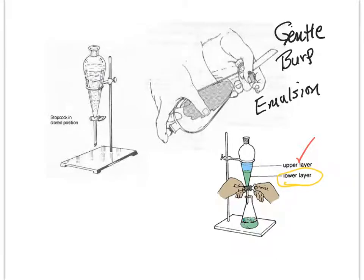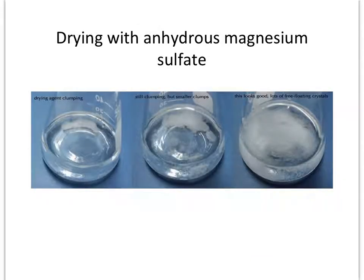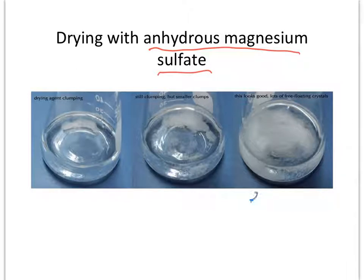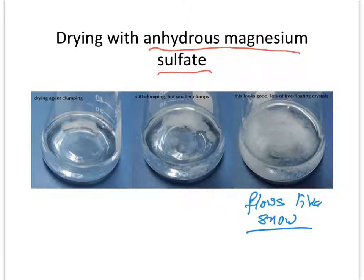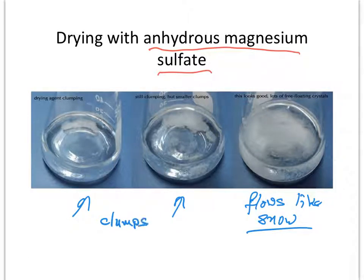We're going to dry with anhydrous magnesium sulfate again — this is something we've done before. Remember: keep adding it slowly until the material flows like fine snow when the flask is swirled. When magnesium sulfate is absorbing water it clumps; when it stops clumping and flows like snow, your layer is dry.